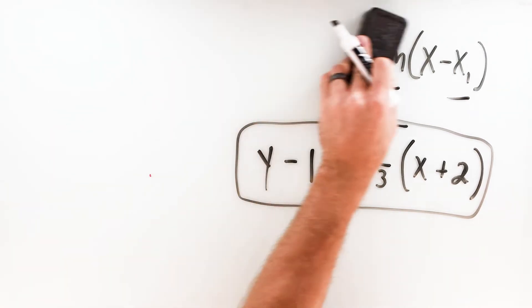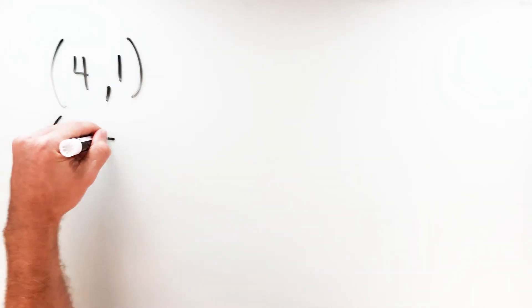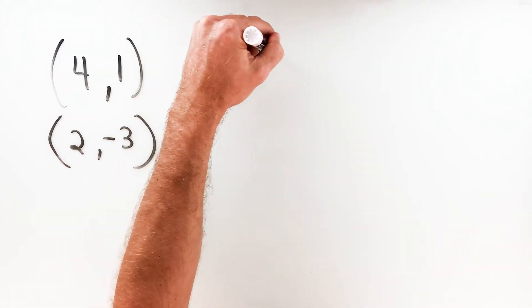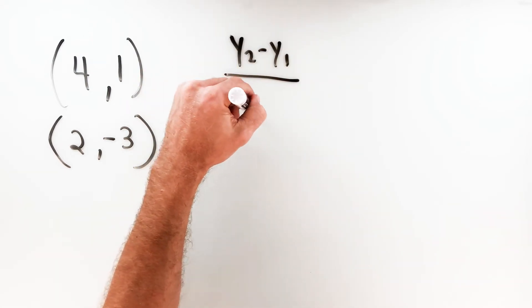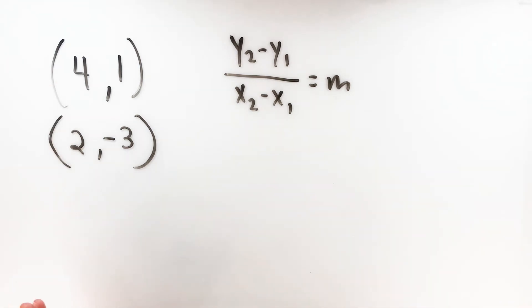Let's do another example. This time I'll give you a little different information. Let's say the line we want to write the equation for is given two points on that line. With point-slope form, I need a point and a slope. I have two points but no slope, so I need to use the slope formula — the difference of the two y-coordinates over the difference of the two x-coordinates. I can plug the points into the slope formula to find the slope, then choose one of the two points and plug into point-slope form.